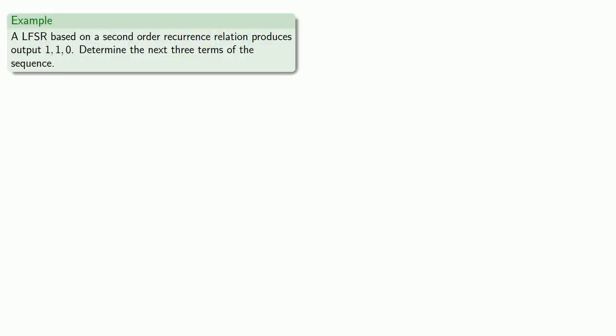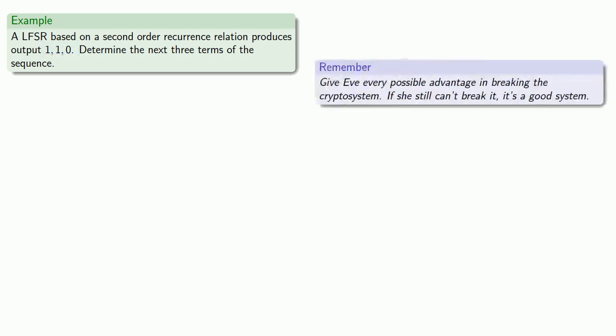For example, suppose we have a LFSR based on a second order recurrence relation, and Eve has determined the first three components of the key are 1, 1, 0. Let's determine the next three terms of the sequence. Again, we're giving Eve every possible advantage. She knows that this is a second order recurrence relation, and she knows three terms of the output.